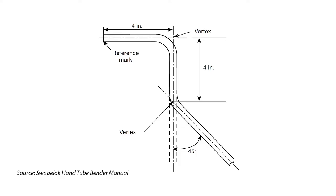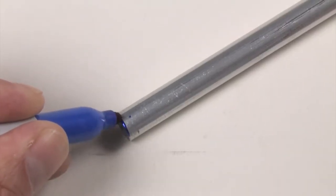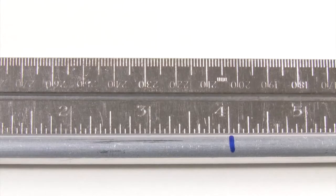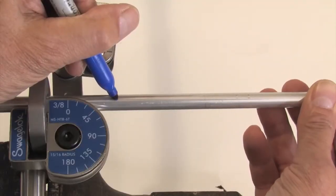To form the layout, mark the end of the tube where the measurements will start. Place a mark 4 inches from the end of the tube, marking the tube all around.